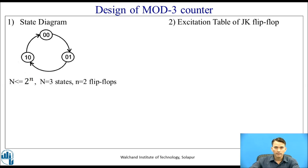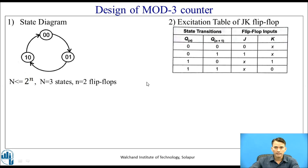Since we are using JK flip-flops, the excitation table for the JK flip-flop has the first column as state transition and the next column as flip-flop inputs. The present state is represented as Qn and the next state as Qn+1. For a 0-to-0 transition, JK input should be 0, don't care. For a 0-to-1 transition, JK input should be 1, don't care. For a 1-to-1 transition, JK input should be don't care, 0.